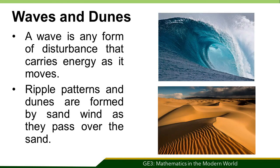Examples are waves and dunes. A wave is a form of disturbance that carries energy as it moves. Waves are of different kinds — mechanical waves, which propagate through a medium like air or water, making it oscillate as waves pass by. Wind waves, on the other hand, are surface waves that create the chaotic patterns of the sea. Similarly, water waves are created by energy passing through the water causing it to move in a circular motion. Likewise, ripple patterns and dunes are formed by sand and wind as they pass over the sand.